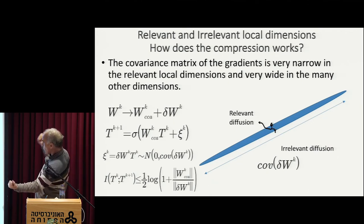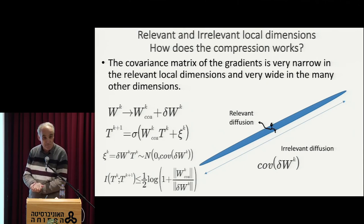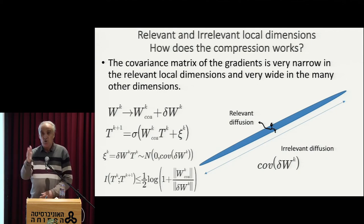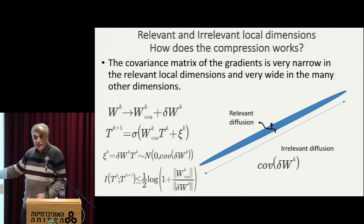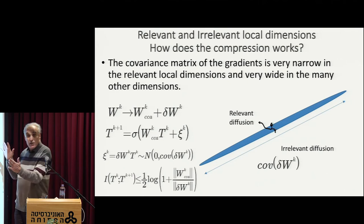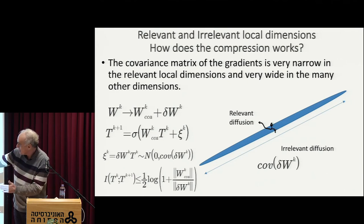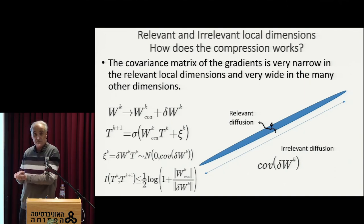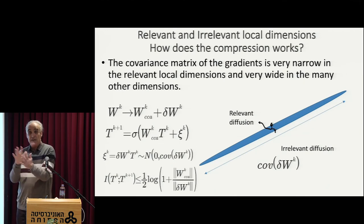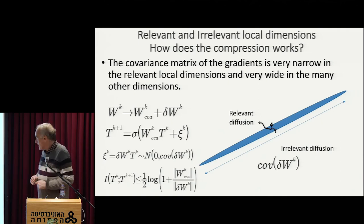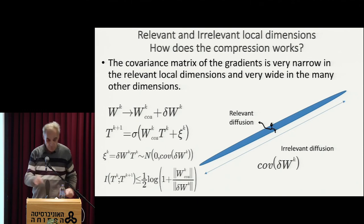The noise is going to grow in these irrelevant dimensions like square root of T, or some power. Before I do this estimation correctly, you just see that this immediately tells me that I can bound the mutual information between two consecutive layers by this Gaussian bound on the information, which is the log of one plus the signal-to-noise ratio. And this already tells me — look for any non-linearity. The non-linearity here is sigma. The map between one layer to the next is essentially a non-linearity of a linear function.